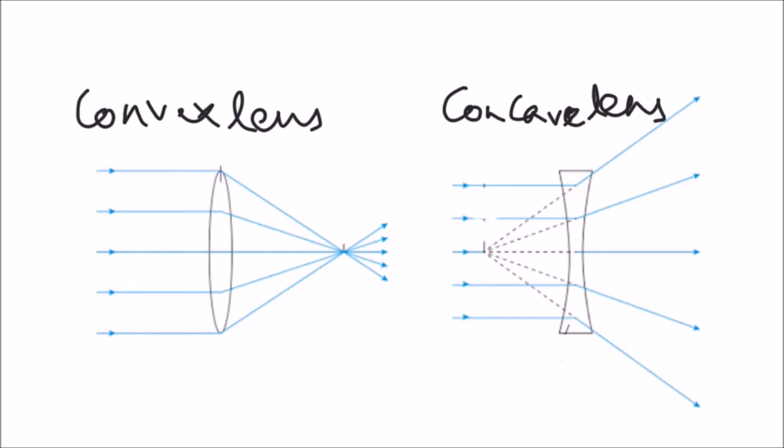For a concave lens, all the parallel rays diverge and all the rays that are getting diverged appear to diverge from a point which is called the focal point.